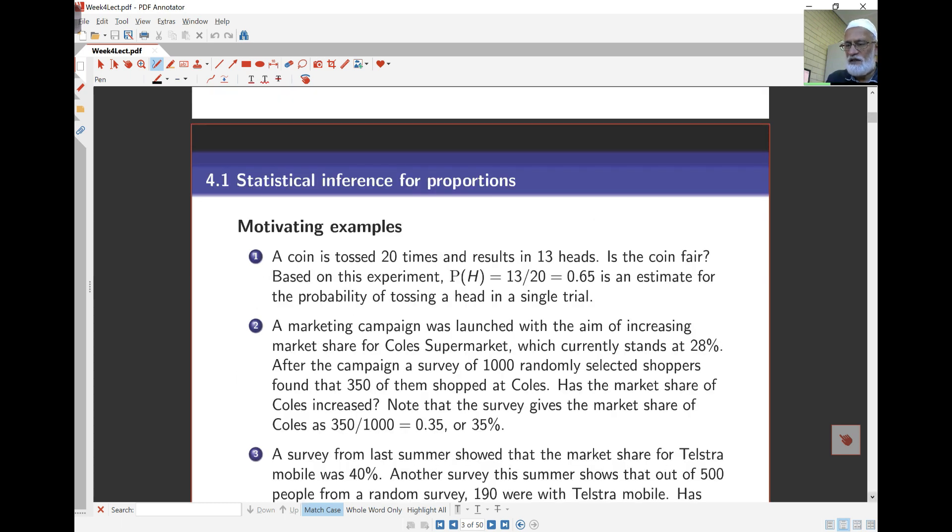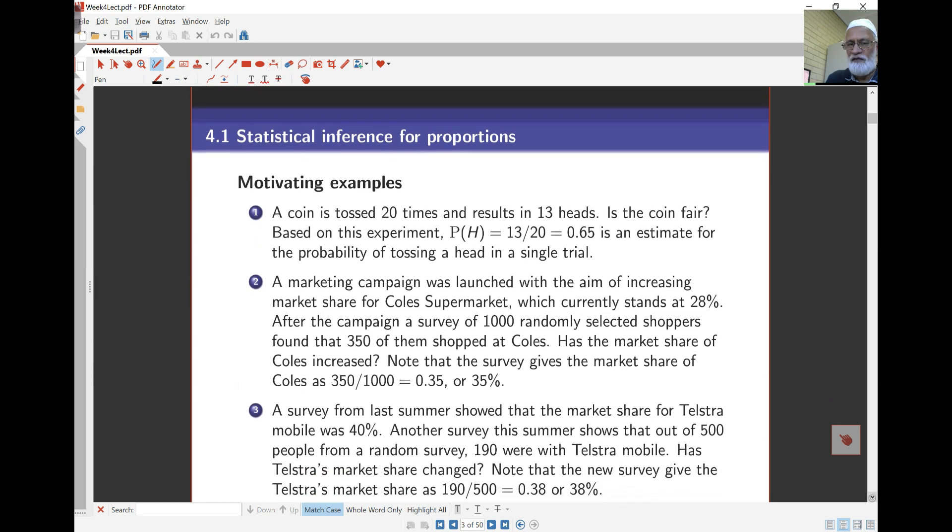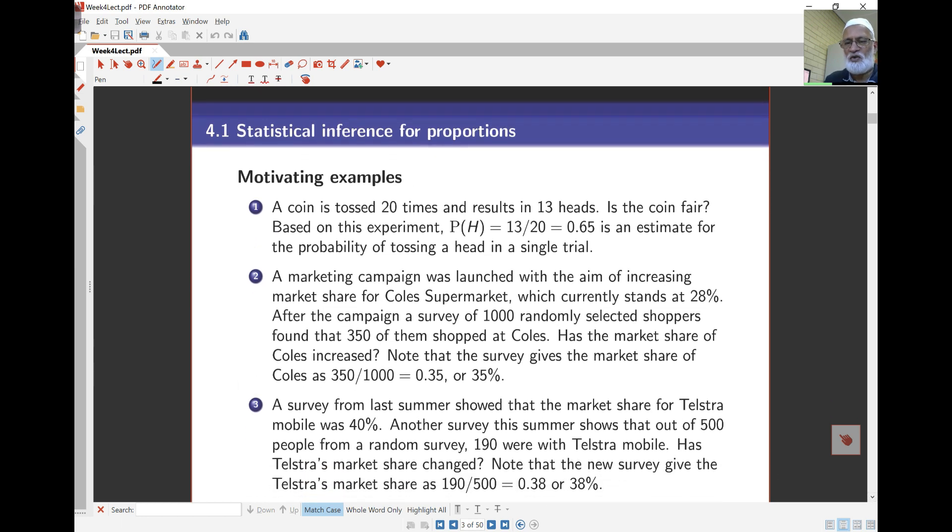Here are some examples to motivate us. The first is that a coin is tossed 20 times and results in 13 heads. The question is, is this coin fair? If I get 13 heads from 20 tosses, my probability of heads or proportion of heads is 13 on 20, which is 0.65. Is this far away from 0.5 for me to be able to conclude the coin is unfair?